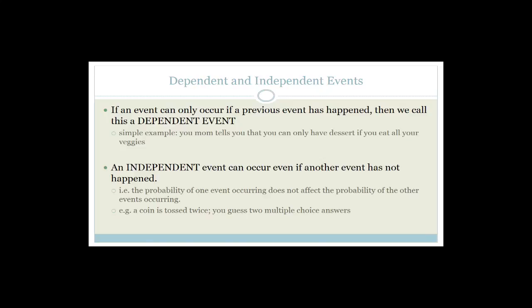Another independent event would be guessing multiple choice. You might think: I've had four A's in a row, I must have made a mistake. But every multiple choice question is supposed to be answered on an independent knowledge set — question A might be on colours and question B might be on numbers. Nobody's looking to see if the answers are A, A, A, A. All they're doing is testing your ability on each separate question. So therefore, that's an independent event.